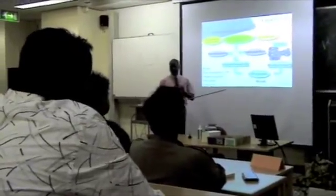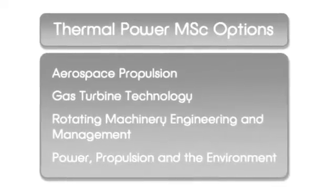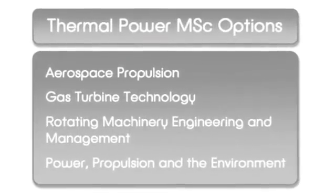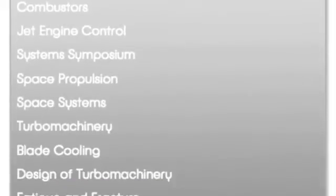The Thermal Power MSc course at Cranfield is split into two parts. There is the taught aspect of the course and the research element that results in the production of a thesis. The research is based on industrial and scientific problems that the student gains in-depth knowledge of trying to solve. The student has the opportunity to work with industry as well as academic staff. For the taught aspect of the course, we have compulsory modules as well as optional modules, and this range allows students to choose the option that best suits them.